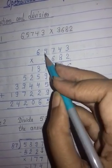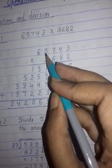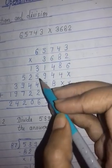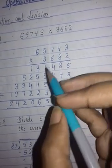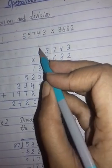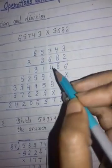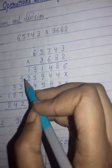8 times 5 is 40, add the carry also, that was 5. 40 plus 5 is 45. Write down 5, again carry is 4. 8 times 6 is 48, 48 plus 4 is 52.